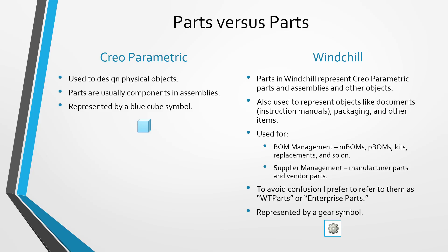Besides creating manufacturing BOMs, you can create other different kinds of BOMs like purchasing BOMs. You might have a bunch of fasteners in your assembly and want to group them all together to represent how they're going to be purchased. Or maybe some components are purchased as a single unit — for example, with antennas you get the actual antenna, the base, and some cables, which would be separate items in your engineering BOM but represented together in the purchasing BOM as a single package. Other uses for BOM management are kitting and creating special bills of materials for replacement parts.